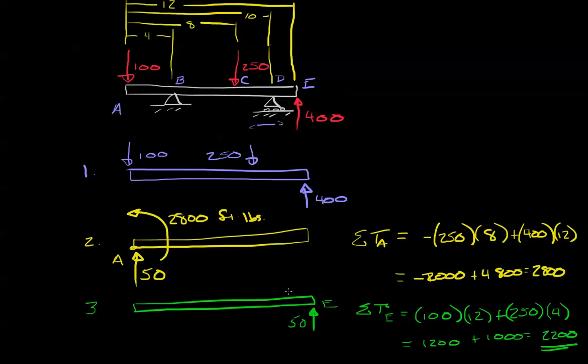So in other words, and it's positive, right? So we're going to have 2200 foot pounds of positive torque around E. Great. So now we're making some progress. We found equivalent forces on A and E.